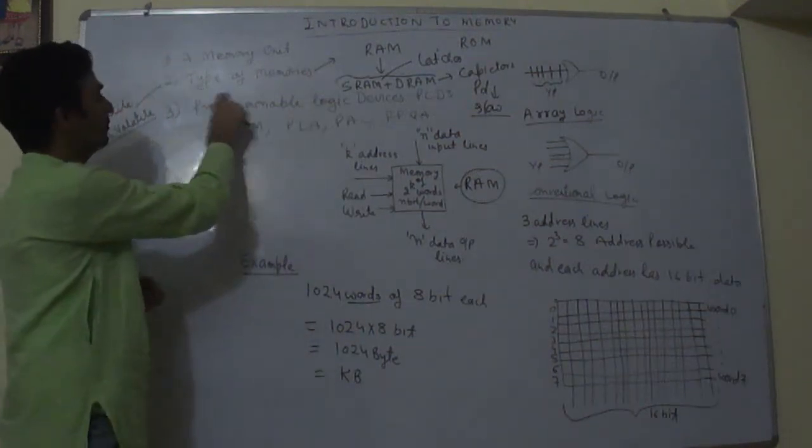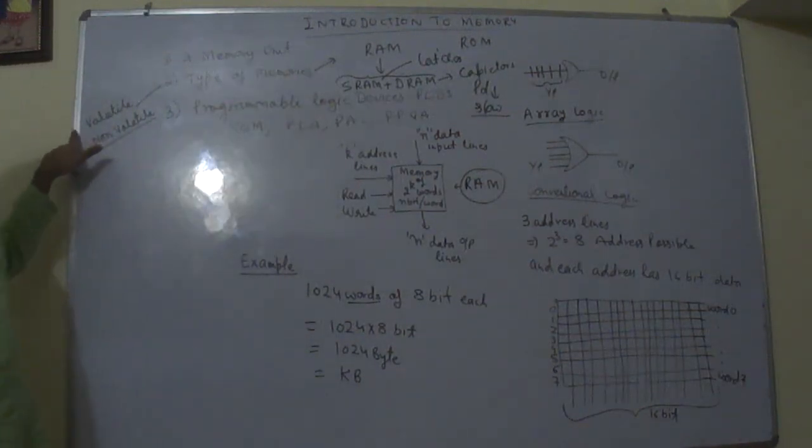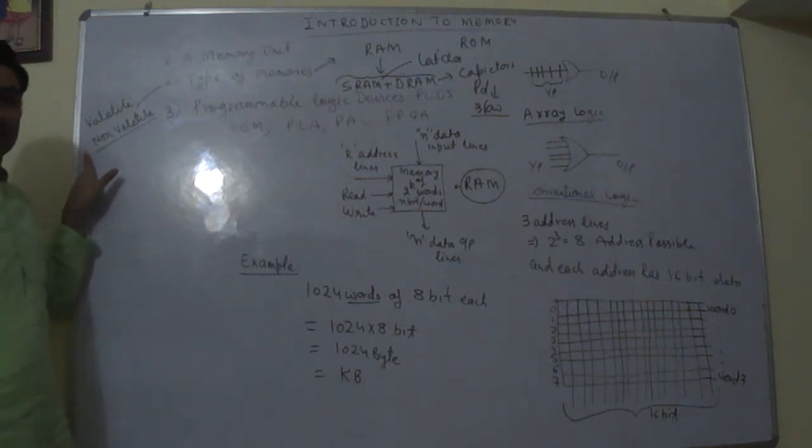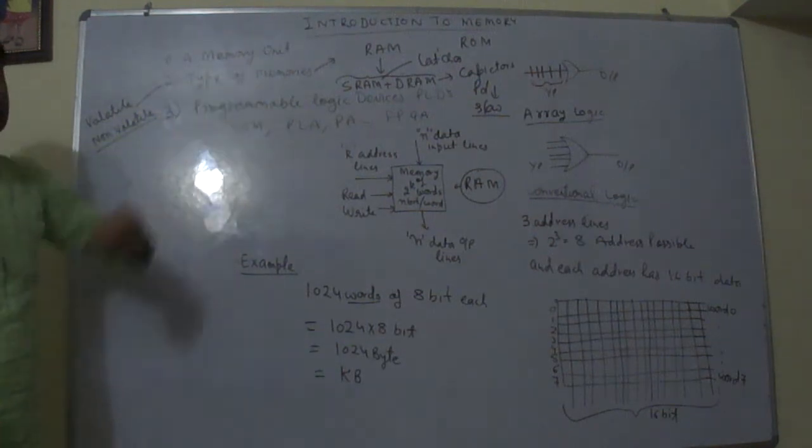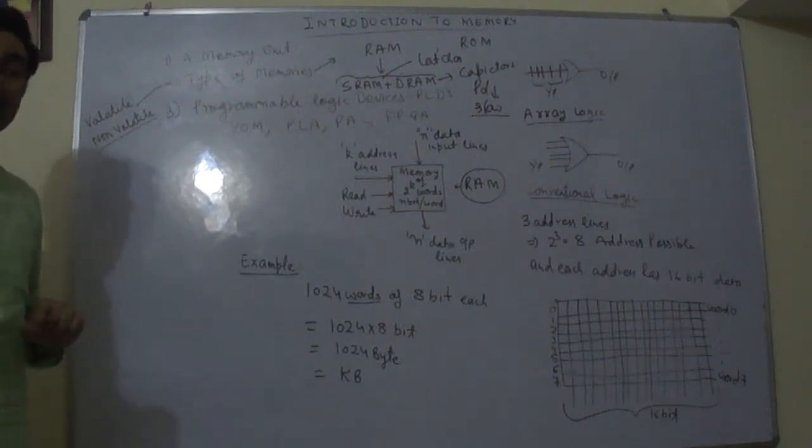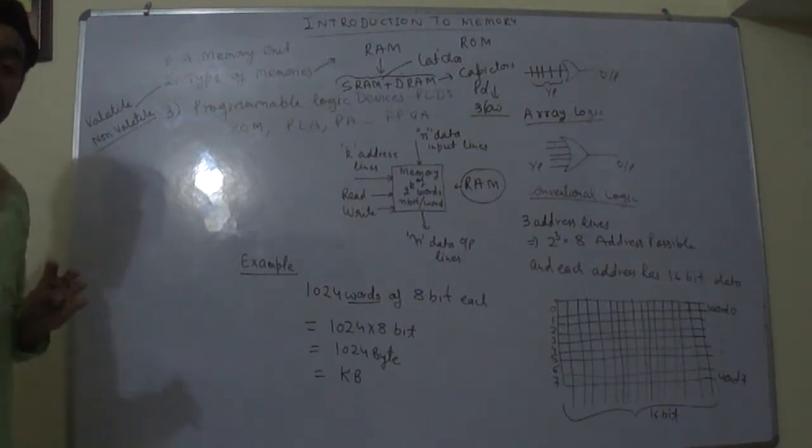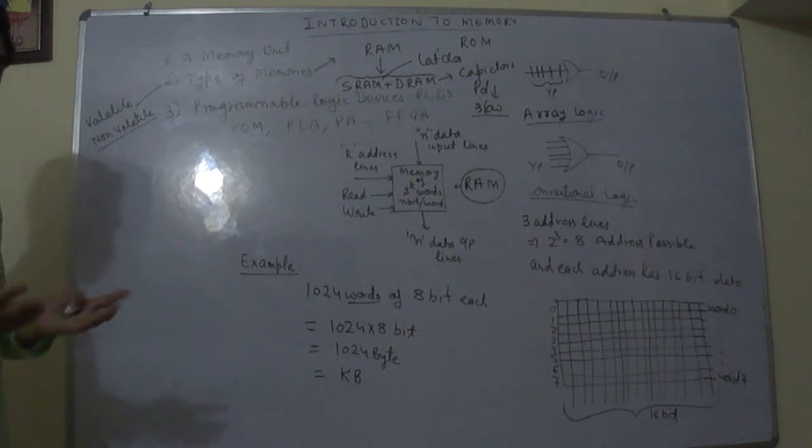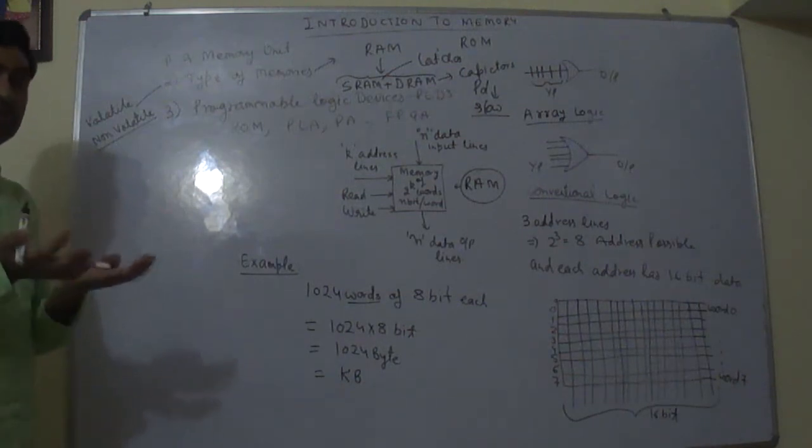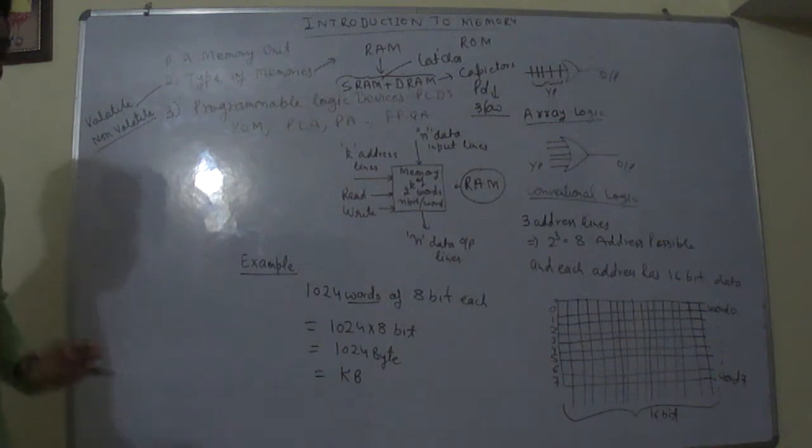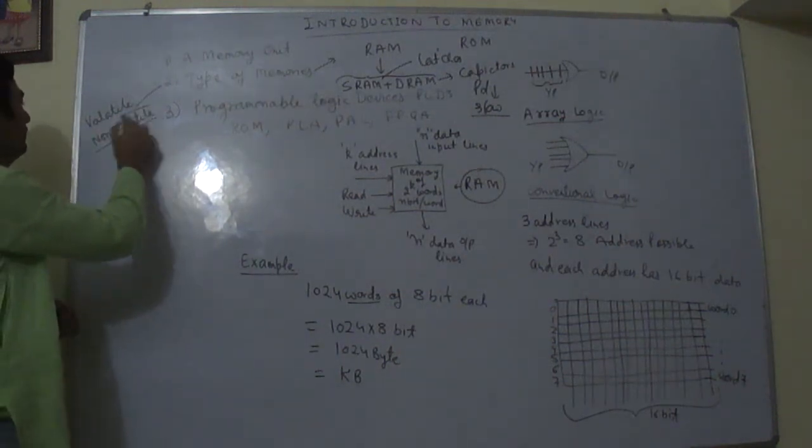Then types of memories, we also have volatile and non-volatile memories. Volatile memories are those which can be erased if they are operating without a battery. So they always require a battery or power with them to keep the information. Once battery power is gone, information will be lost.